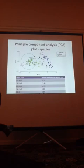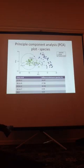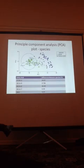If we do a principal component analysis, this is where we can determine the discriminating fatty acids and their responsibility in the difference between these species. We found that the top one, 22:6n-3, is DHA — one of those omega-3 fatty acids that's pretty important. We've also got oleic acid and EPA, which is another important omega-3, ranking at the top as the fatty acids most responsible for the differences between these two species.